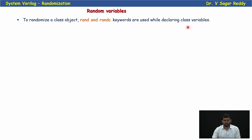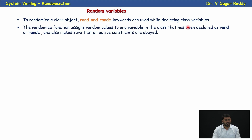In order to make a class variable a random variable, we should declare those variables with a rand or randc modifier. The randomization function assigns random values to any variable in the class that has been declared as rand or randc, and also makes sure that all active constraints are obeyed.